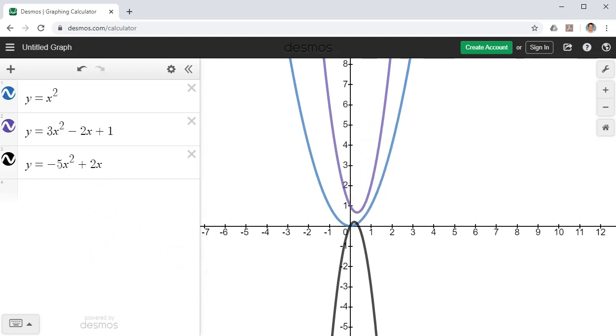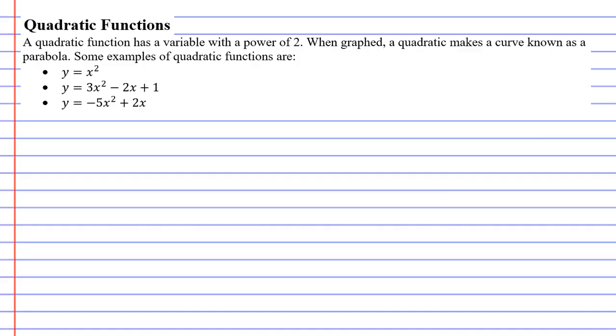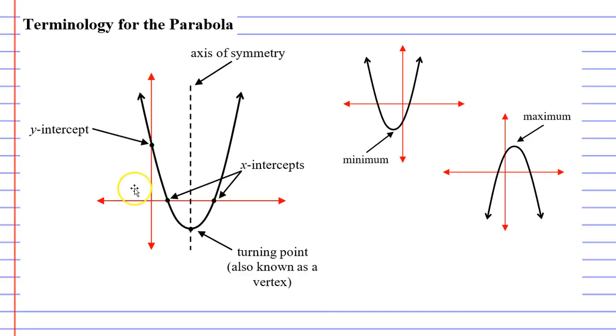Now there's some terminology that I'd like to talk about when dealing with the parabola. Whenever you have a parabolic curve, you're always going to have something known as an axis of symmetry. An axis of symmetry basically cuts our curve in half. Here we can see an axis of symmetry here. You'll notice that the parabola is symmetrical on each side of the axis of symmetry.